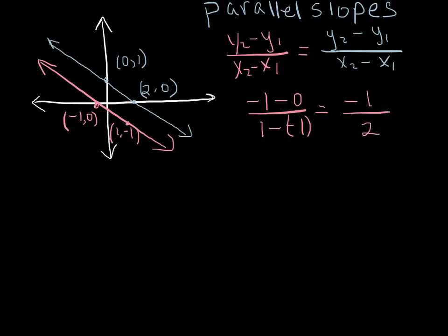So we've got negative 1/2 slope, so that means the rise is negative 1. So really that means that it goes down 1 unit and then for every 1 unit I go down I go over 2 units.